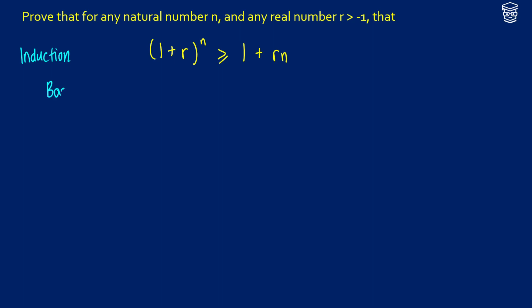For the base case we need to check that n equals 0 is true. If we take 1 plus r to the 0, this should be greater than or equal to 1 plus r times 0. So 1 plus r to the 0 is just 1, and 1 plus 0 times r is just 1, so our base case holds. 1 is greater than or equal to 1.